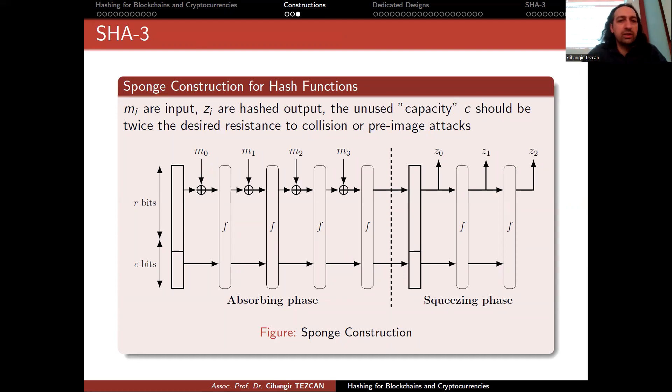You can use a sponge construction for hash functions. You can use a sponge function to use them as a block cipher too, but in this scenario we are going to use the sponge function for the hash function. The idea is as follows: m_i's are input (m_0 to m_3 here), z_i's are hashed output.